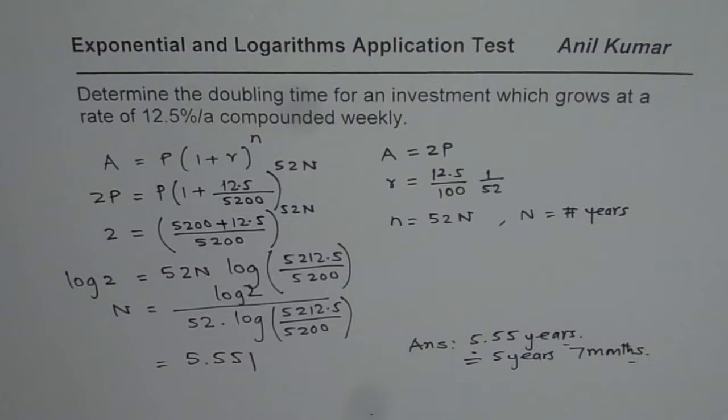The concept is, if we have a compounding period which is weekly or monthly or quarterly or semi-annual, we have to change the values of r and n as we did here.